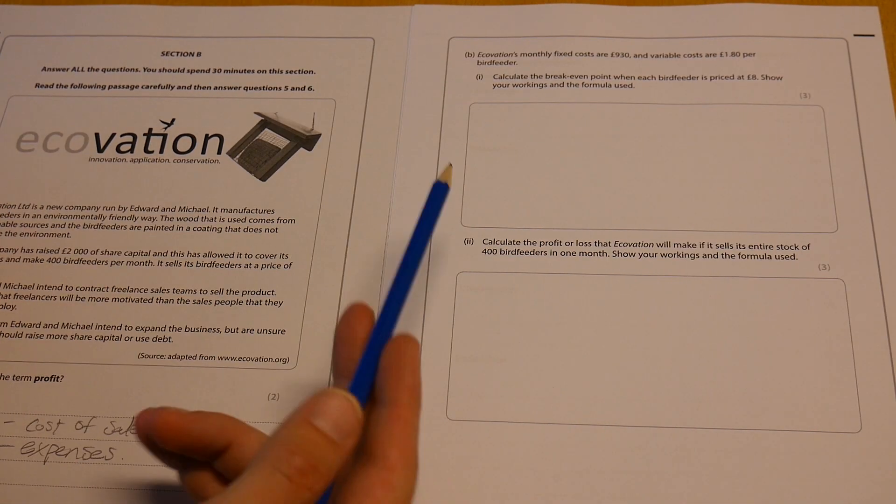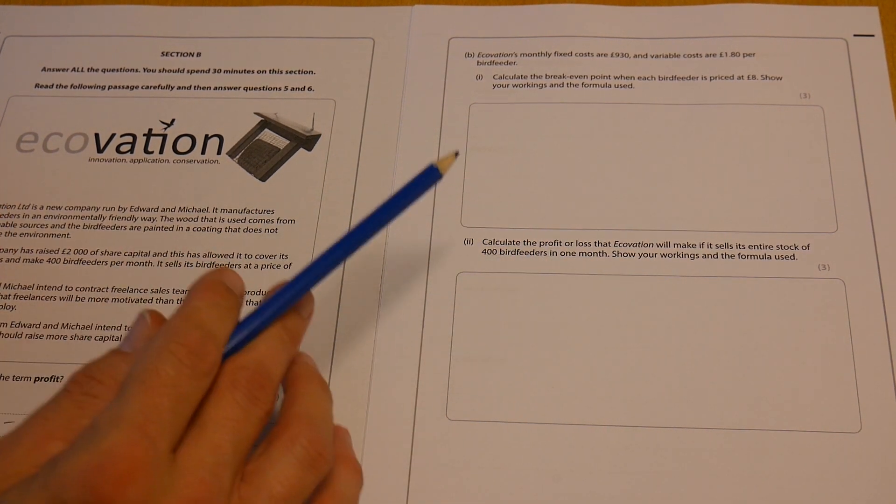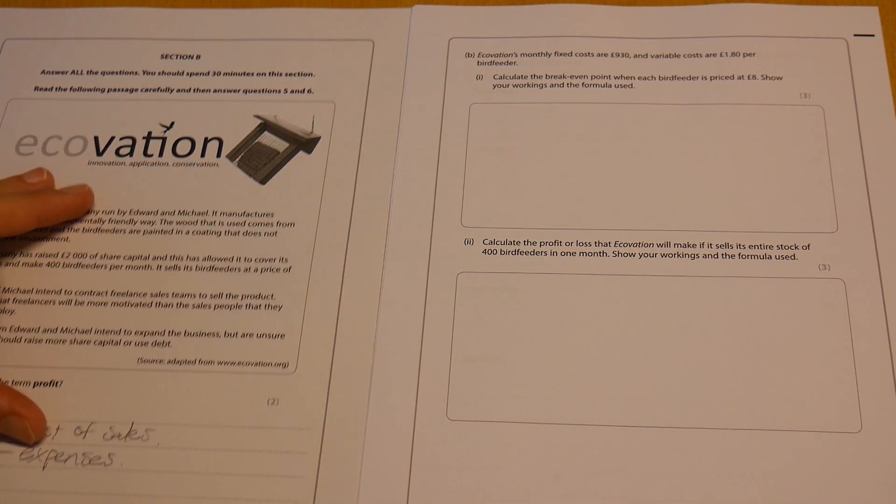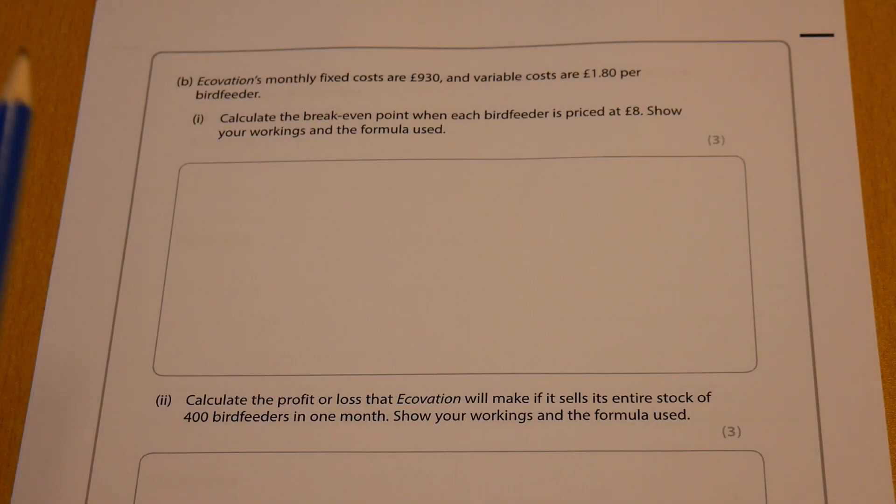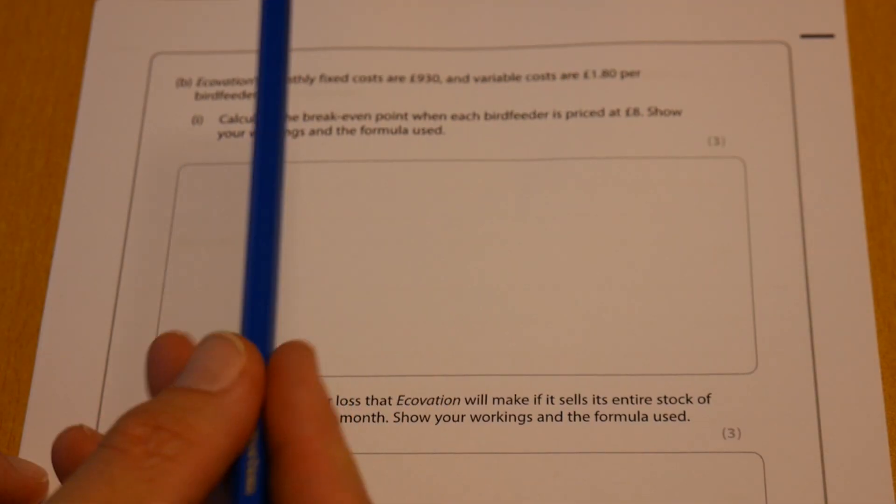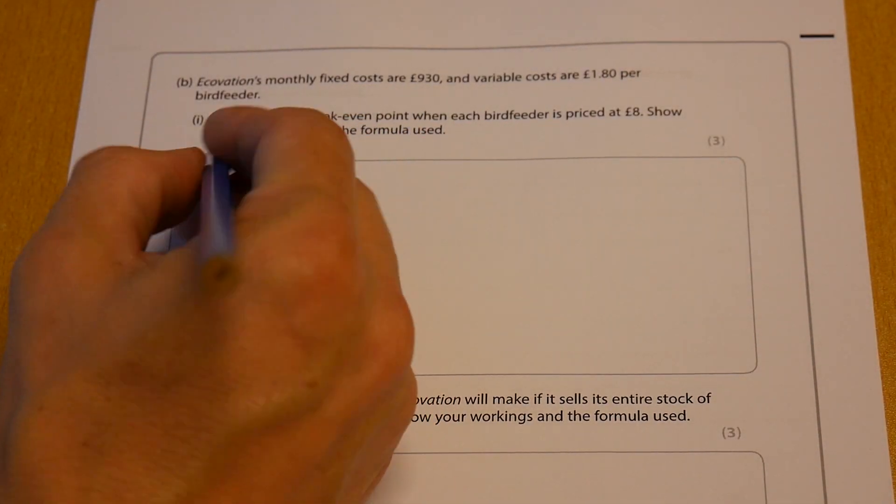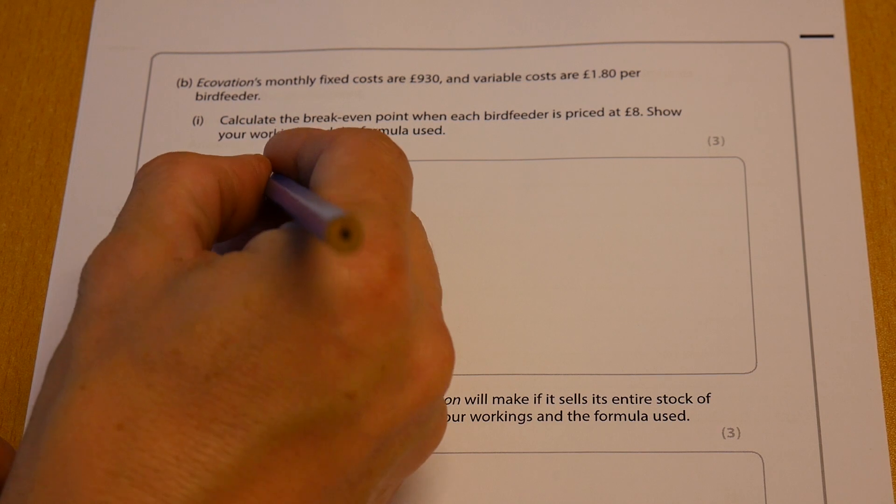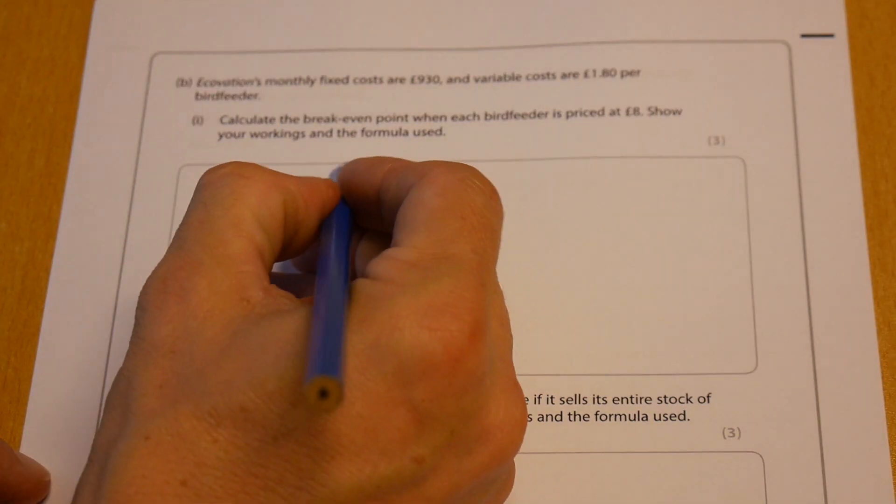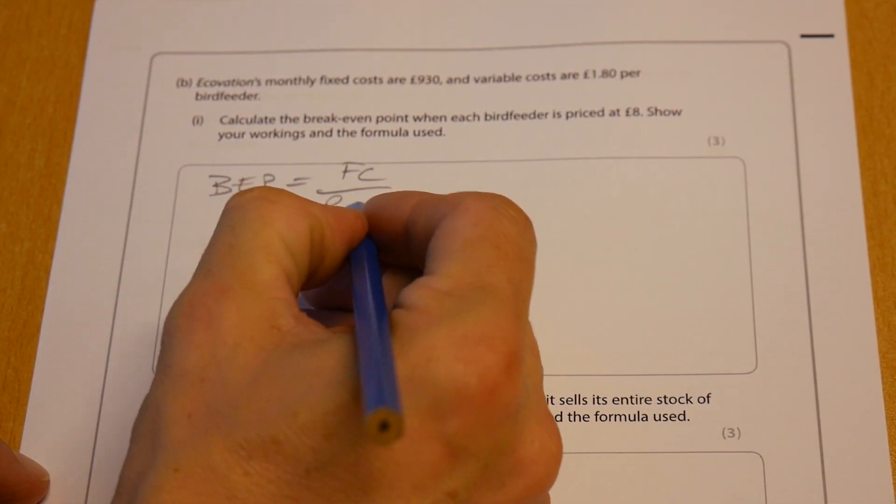Now calculate the break-even point when each bird feeder is priced at eight pounds. Let's just go to one page. So we've got monthly fixed costs of £930, and we've got £1.80 per bird feeder. So of course, break-even point equals fixed cost divided by your price minus your variable cost - your unit contribution.